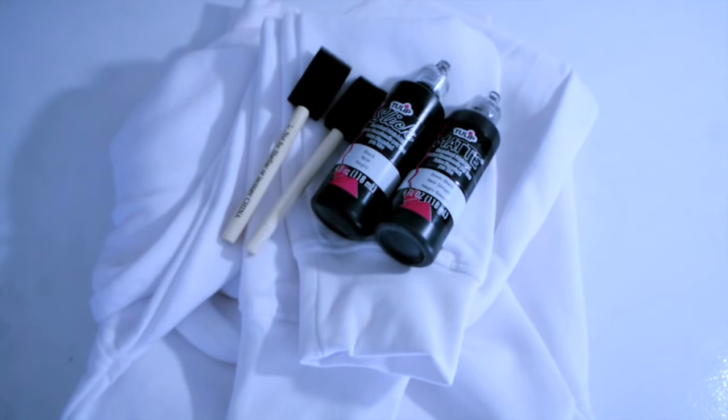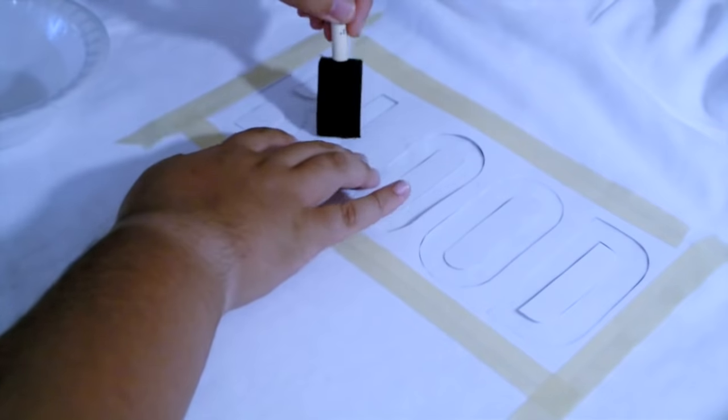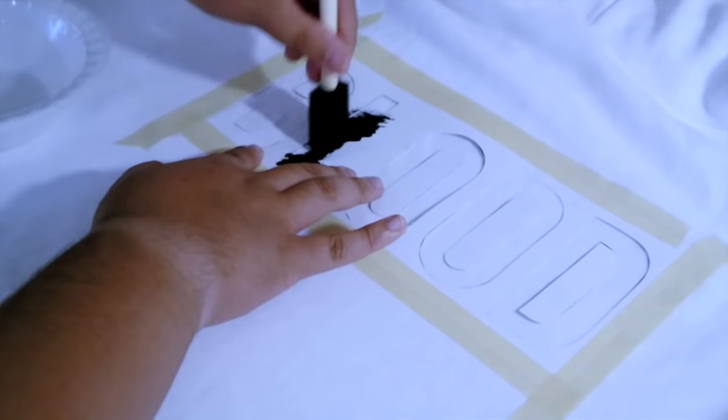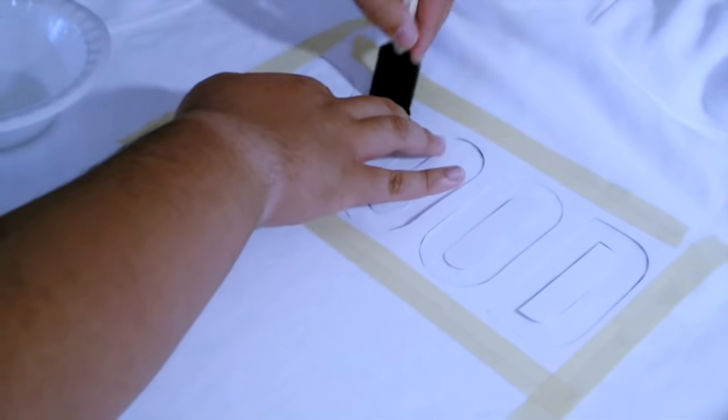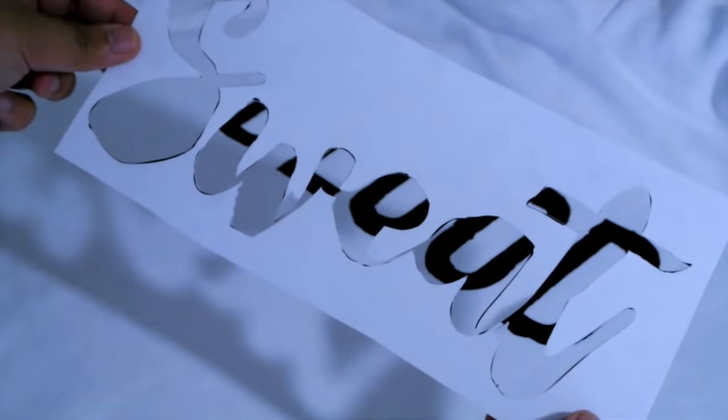You're going to be needing some black fabric paint, some sponges, and a sweater of your choice. So I was inspired by my Blood, Sweat, and Tears phone case. If you haven't seen that DIY, I will leave it in the description box below. But basically, I'm using the same stencils and letters for this sweater and just made them bigger.